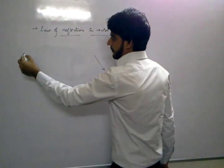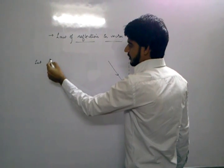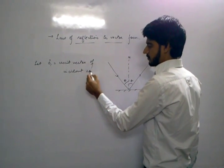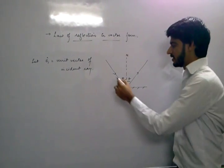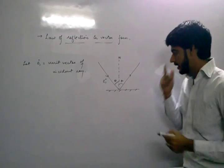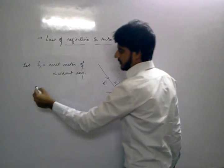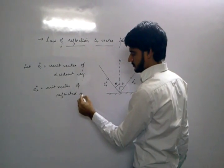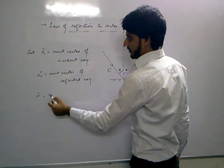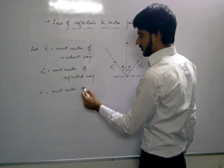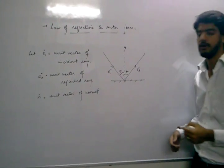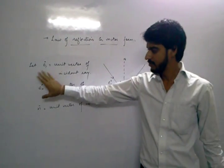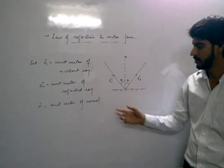Now, suppose let E1 be the unit vector of the incident ray. And let E2 be the unit vector of the reflected ray. And unit vector N is the unit vector along the normal. Now we are going to find the relation between E1 and E2 — the relation between the incident unit vector and the reflected unit vector.